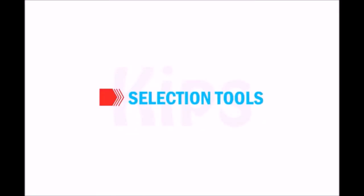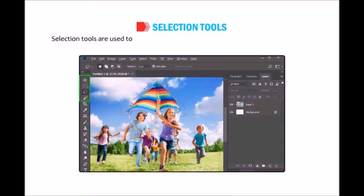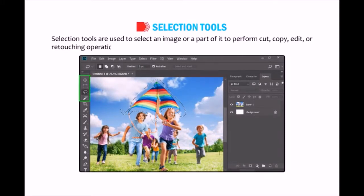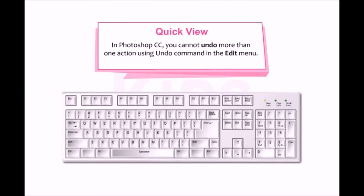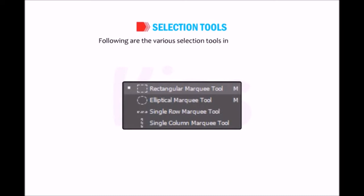Let us discuss selection tools. Selection tools are used to select an image or a part of it to perform cut, copy, edit or retouching operations. In Photoshop CC, you cannot undo more than one action using the undo command in the Edit menu. To do so, press Ctrl+Alt+Z. Following are the various selection tools in Photoshop.